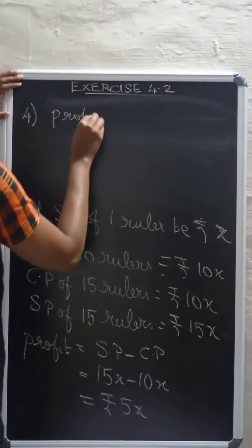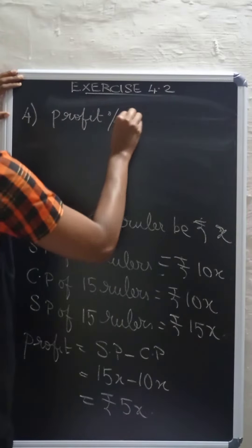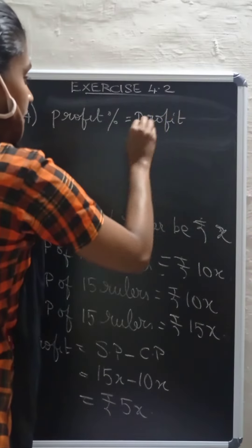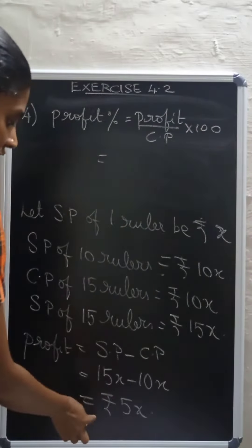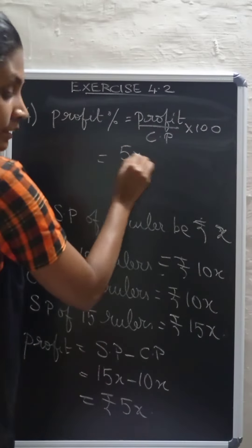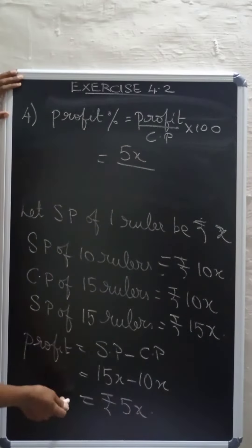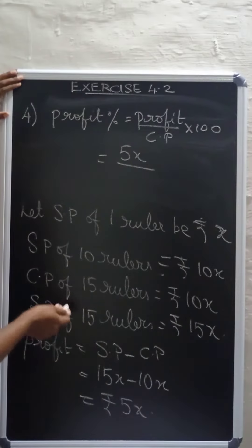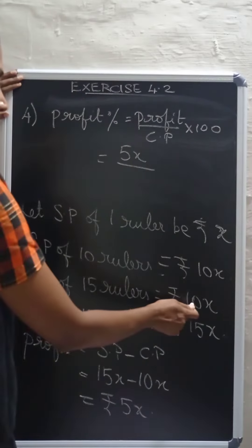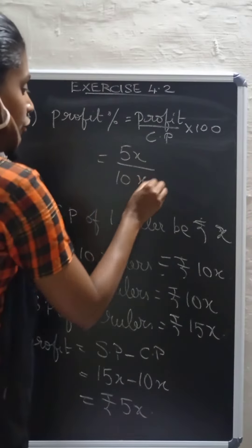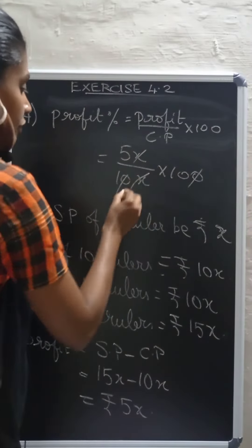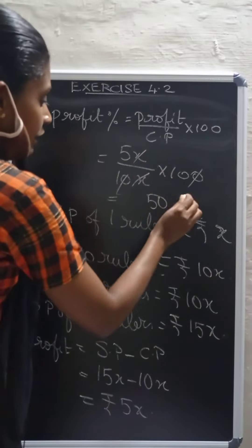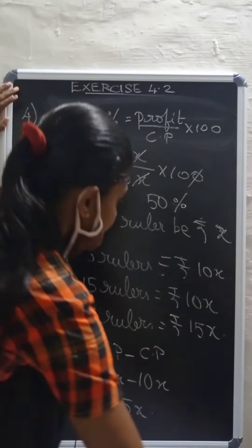Profit percentage is calculated as 2x divided by 10x times 100, which equals 50%.